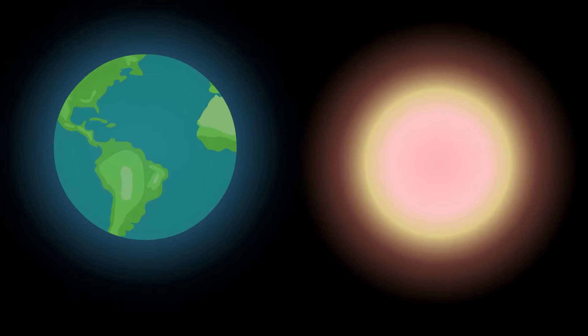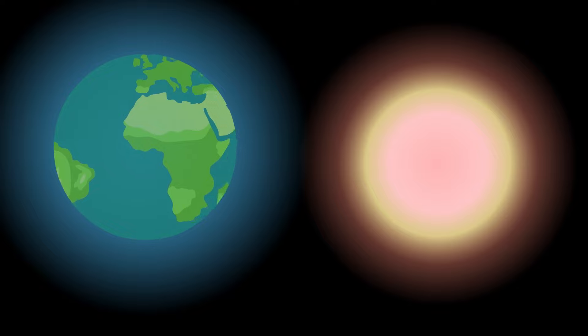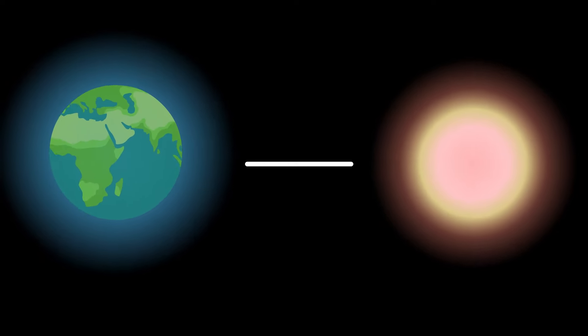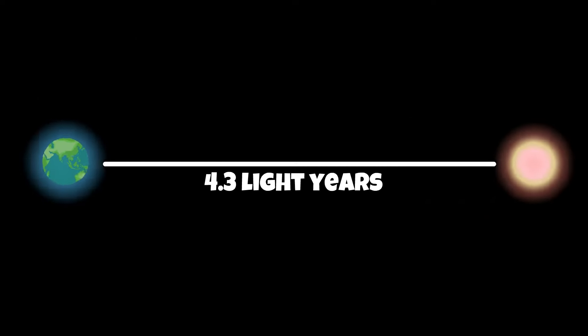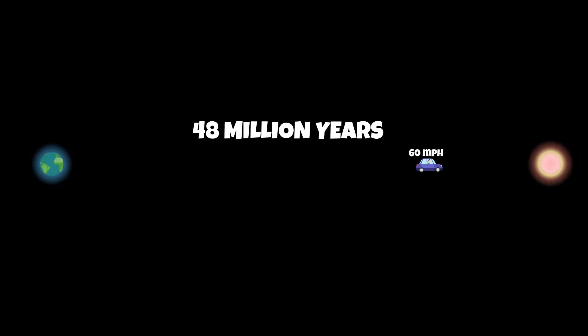Consider the case of Proxima Centauri, the closest star after the sun. It is located at a distance of roughly 4.3 light years. To put this in perspective, if a car starts from Earth and travels at a speed of 60 miles per hour, it would take more than 48 million years to reach that star. That's how far away it is from us.